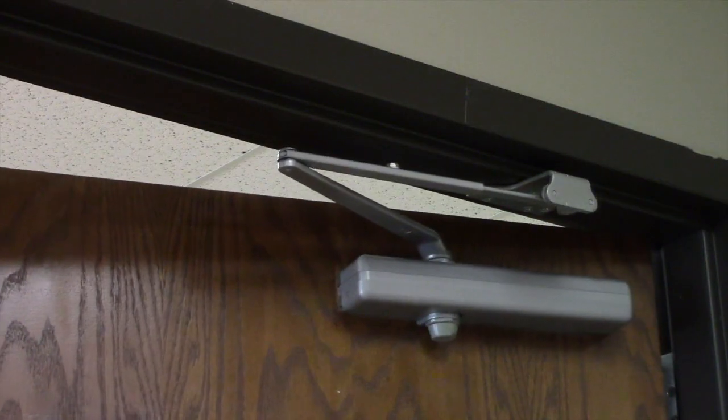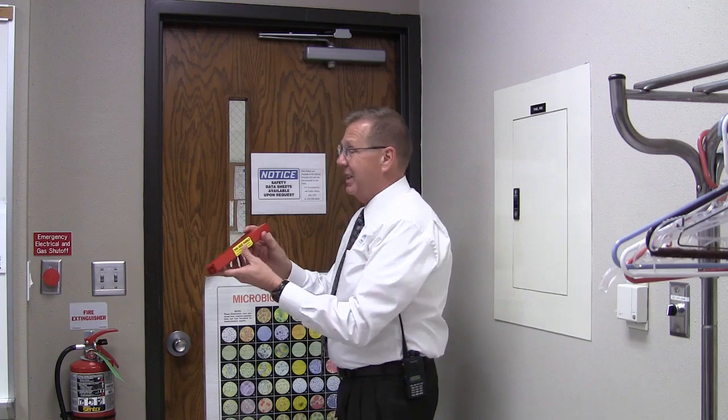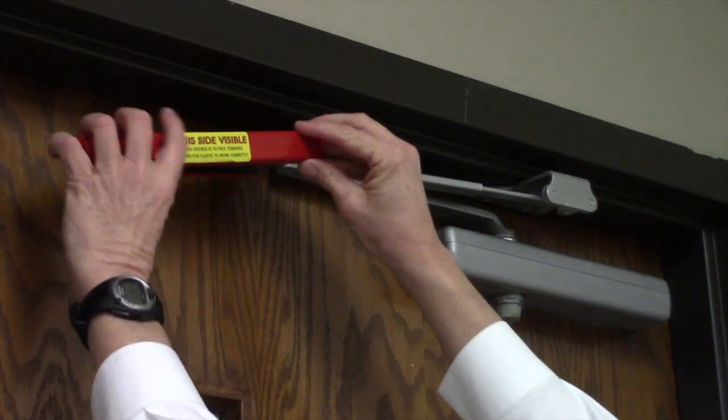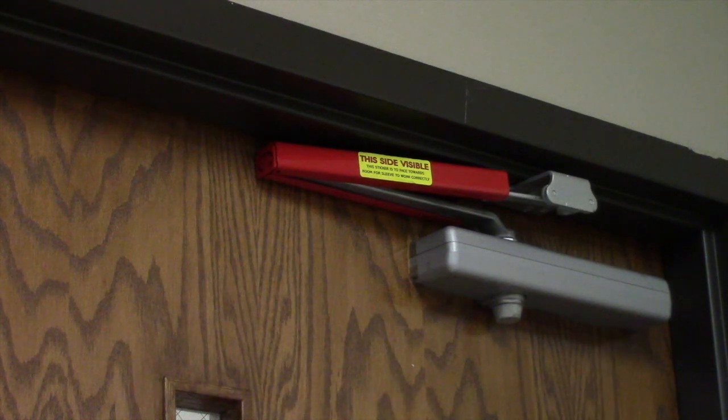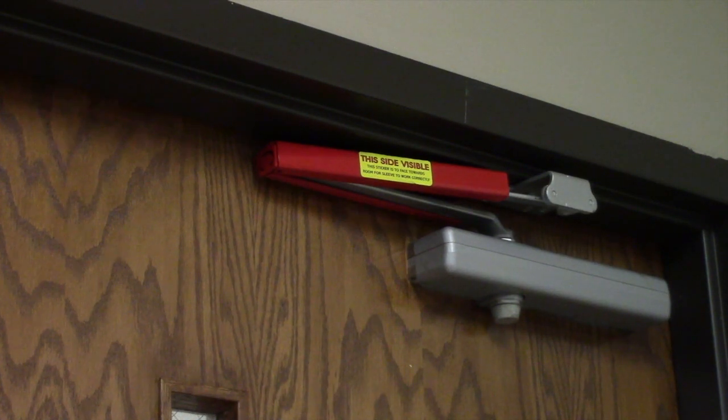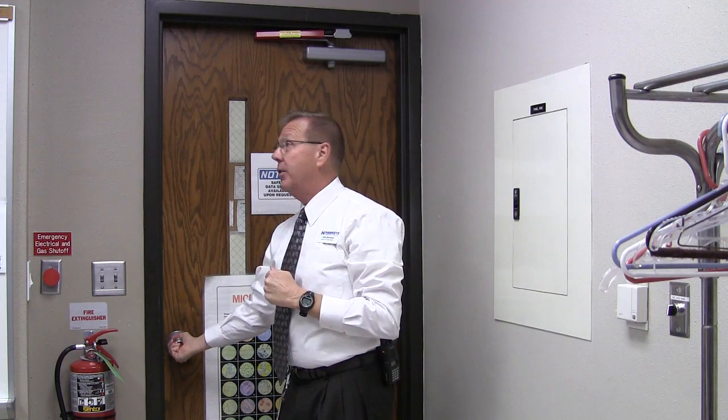Presently the door can be opened and closed freely. However, in the event of an emergency you can engage this sleeve by simply sliding it over top of the door closing device, which then prevents the door from opening from either the inside or the outside.